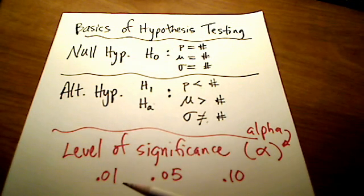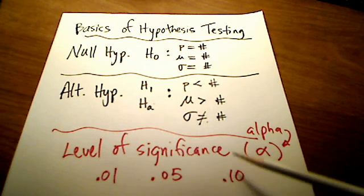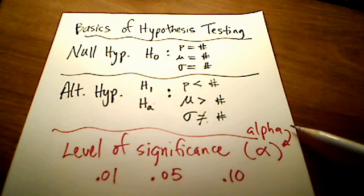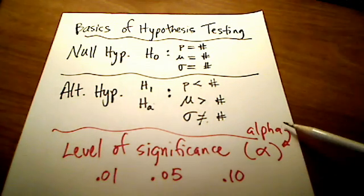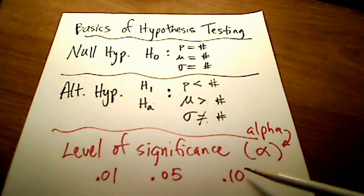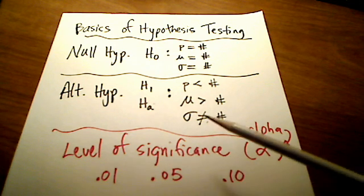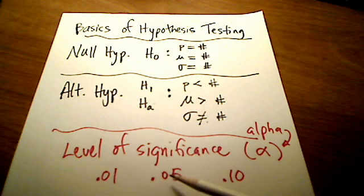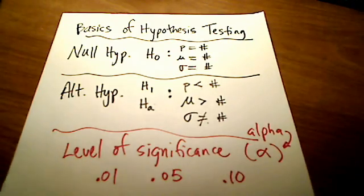What's also true about any method of hypothesis testing is that the level of significance will be given to you. The level of significance we're going to use as alpha — lowercase a in the Greek alphabet. These are three typical levels of significance, but we're not restricted to them: 1%, 5%, or 10%. It could be any one of those or any other value.